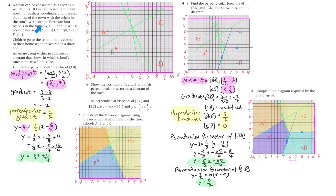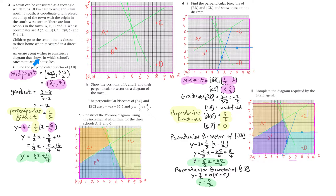There are four schools in the town, A, B, C and D, whose coordinates are these. So I've put them in: A, B, C and D. Children go to the school that is closest to their home when measured in a direct line, and the estate agent wishes to construct a diagram that shows in which school's catchment area a house lies.